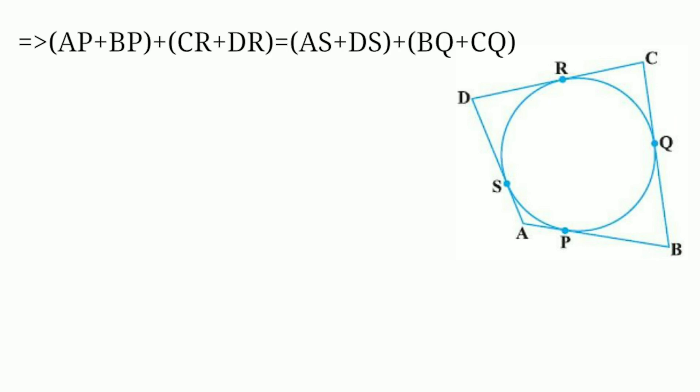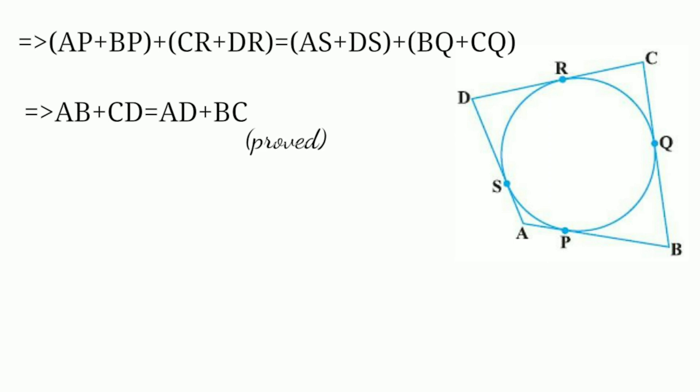I will write the next line of all the brackets and group. As and ds add to this. So ap plus bp is ab, cr plus dr is cd, as plus ds and bq add cq add bc. I will write the next line of all the brackets: ab plus cd is equal to ad plus bc. This is the first line of all the brackets.